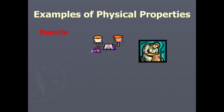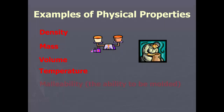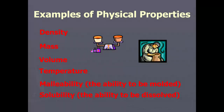A few more examples: density, which is how tightly packed the particles are in the object; mass, which you measure with the triple beam balance; volume, which you measure with a graduated cylinder; temperature, which you measure with a thermometer; and malleability, which is the ability to be molded — if you can bend it and mold it, it's malleable. And lastly, solubility, which is how easily something is dissolved.